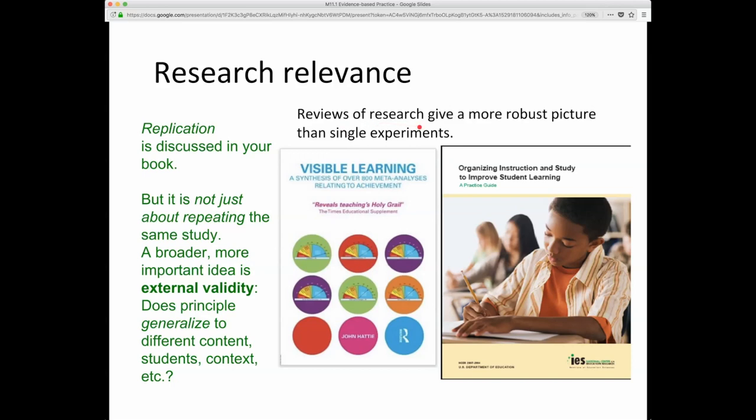So there are a lot of reviews of research that give a more robust picture than single experiments. This book called Visible Learning is a great collection. It's a collection of collections. It collects 800 meta-analyses where each meta-analysis is a collection of usually something like 50 to 100 or even 200 different studies. So this is like 800 times 100 studies all collected in one book with a bunch of summaries usually shown in these meters of what the average effect size is across the say 50 to 100 studies in the meta-analysis. This was a Department of Ed publication from 2007. Actually, I was on this panel that put together this practice guide for applying learning science to improve instruction. Again, both reports rely on multiple versions of experiments testing roughly the same thing. And this is often called replication in the literature and that's what it's called in the book.